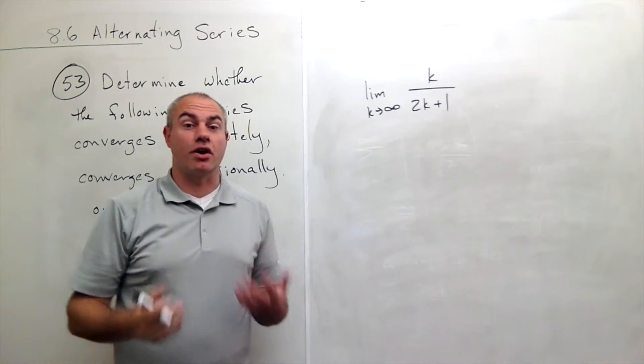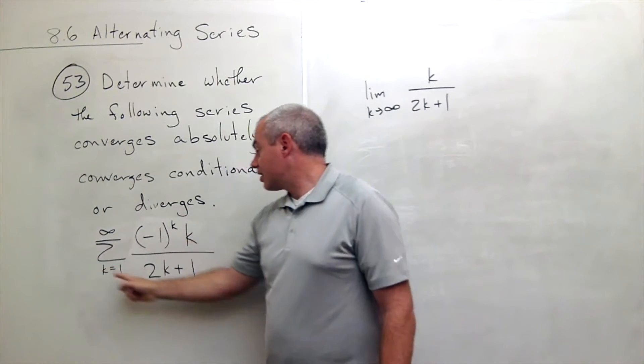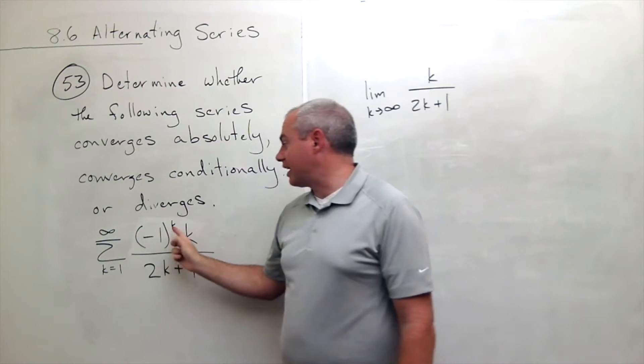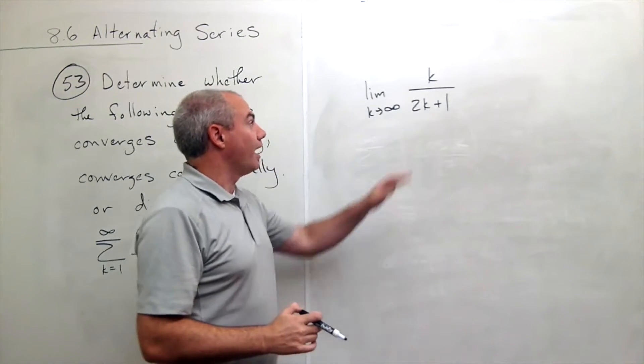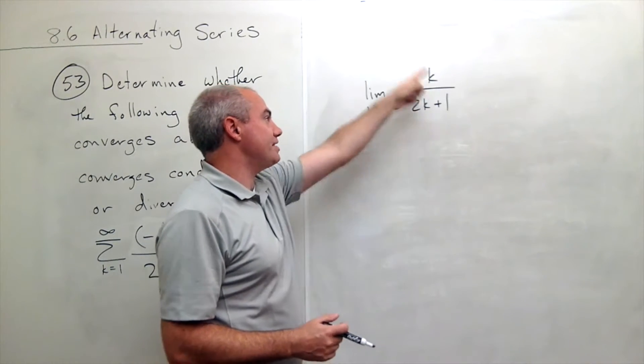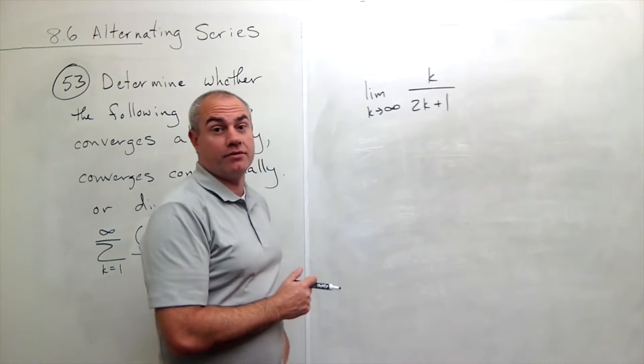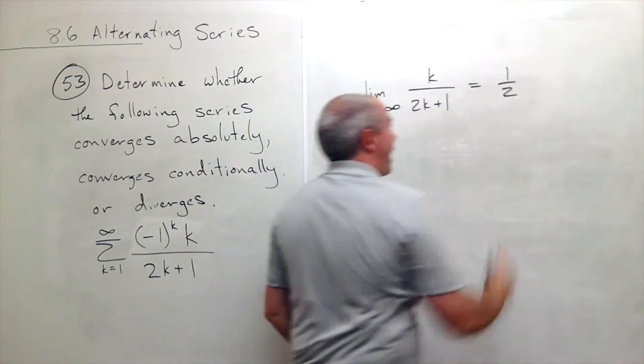So what I'm doing here is I'm using an alternating series test to see if this thing converges if the negative 1 to the k's are in there. And the reason I did this first is because I could see this thing is not going to zero.